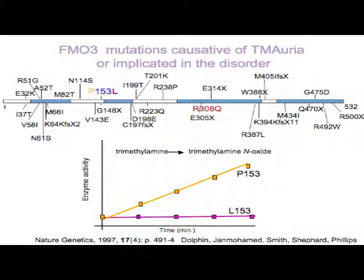In 1997 we published the first report showing that trimethylaminuria is an inherited disorder caused by changes in FMO3. The graph demonstrates what happens when the P at position 153 becomes an L. You can see from the orange line, whose slope increases over time, that the enzyme with a proline at position 153 can convert trimethylamine to trimethylamine N-oxide. However, with the leucine mutation at 153, the purple line is simply flat — this enzyme has no or very little activity towards trimethylamine.